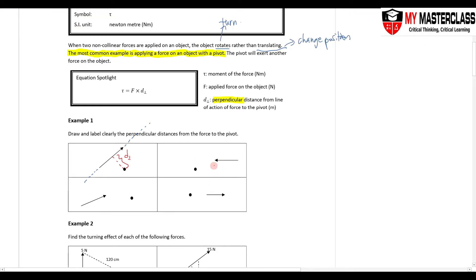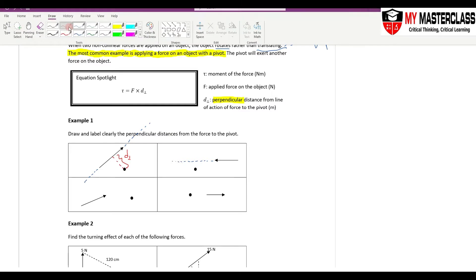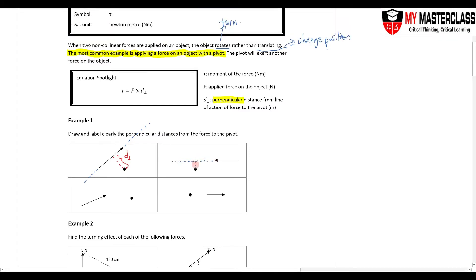In this example, the line of action of the force is in this direction, and the perpendicular distance is here. The perpendicular distance does not need to cut where the force is. A force acting some distance away from the pivot is still able to cause an object to turn.